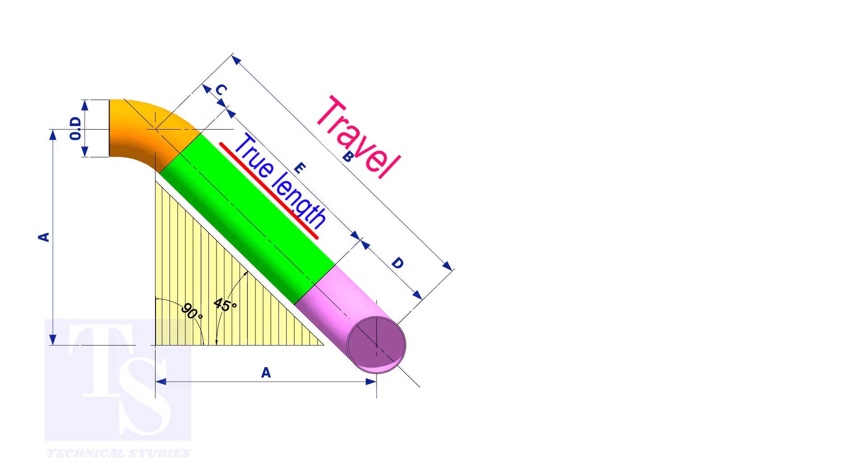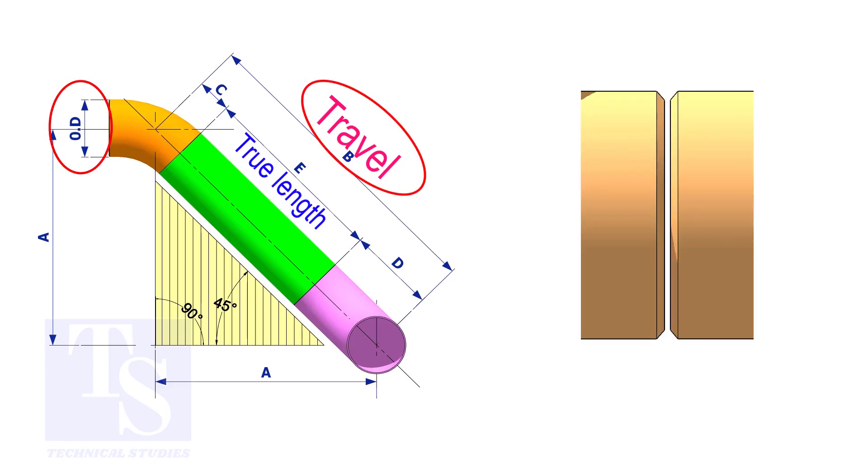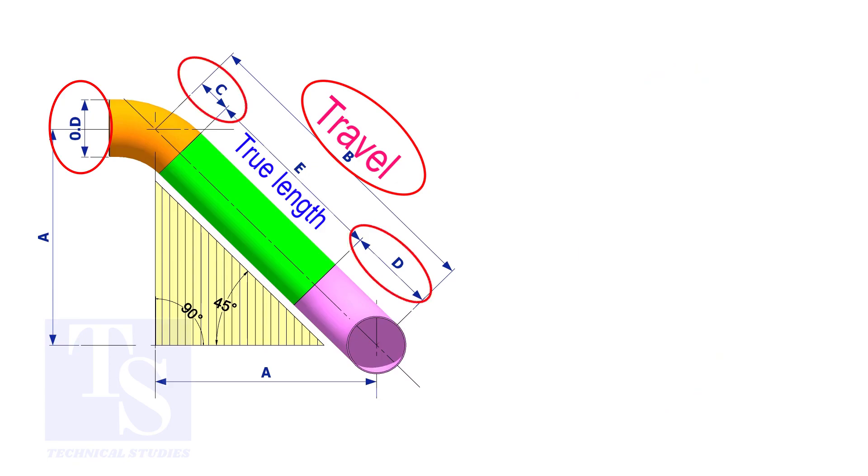To calculate the true length or the cut length, we need to know the travel length, the diameter of the pipe, the joint gap, and the elbow center. The elbow center is sometimes called takeoff length.